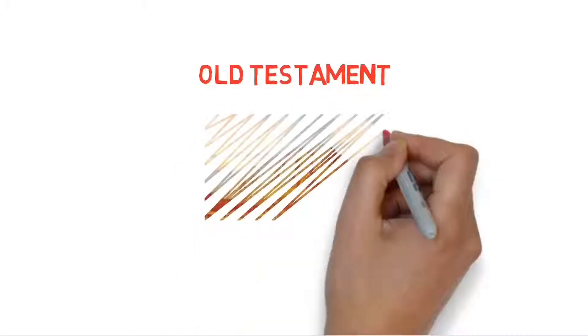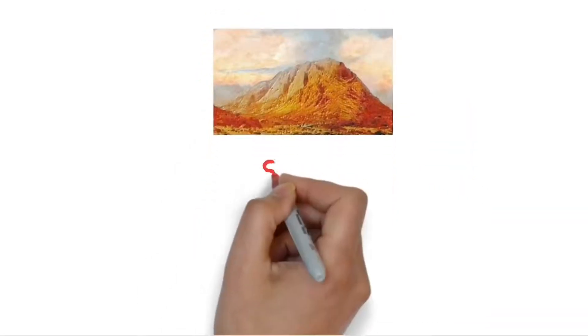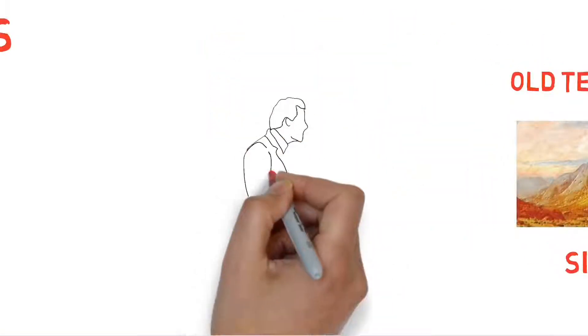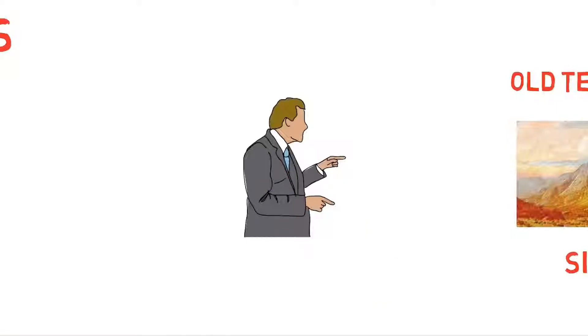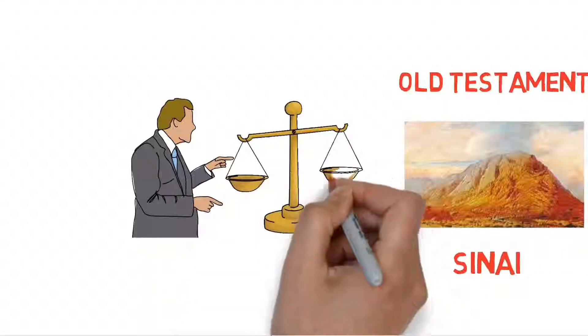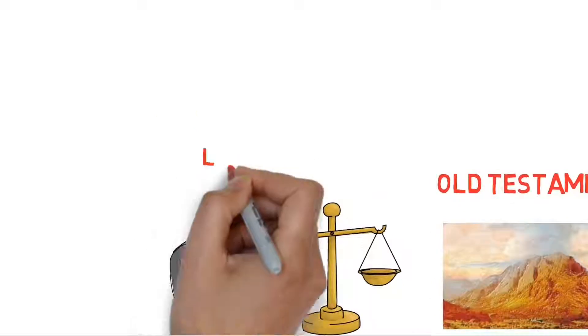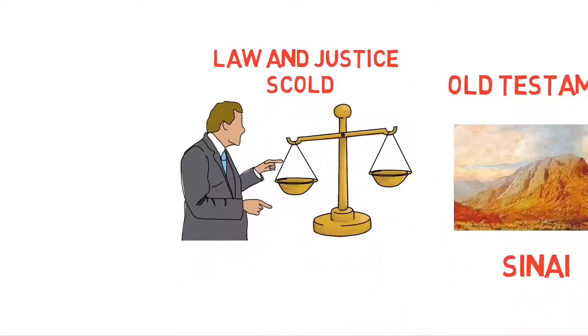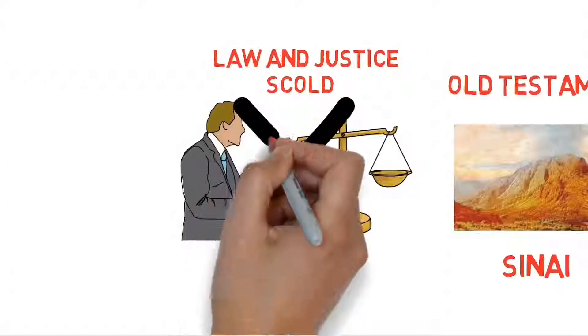When we think of Old Testament covenant, what comes to our mind? Mount Sinai. And what we think, that God of Old Testament is God of anger, who always wants us to judge, always wants us to scold. But wait, that is not the right definition of God of Old Testament.